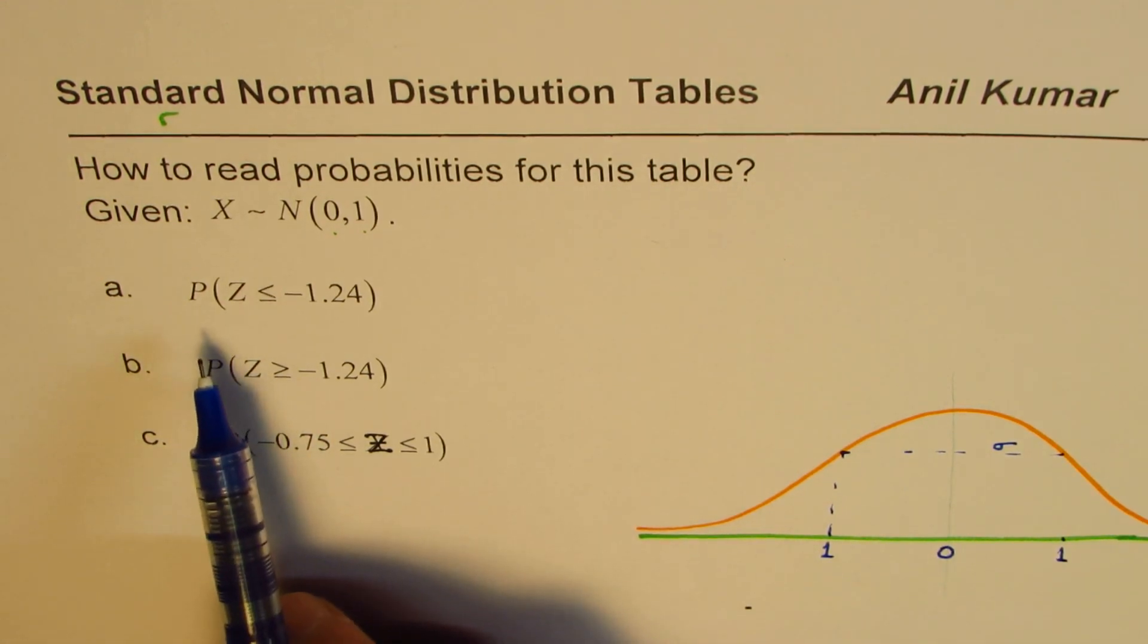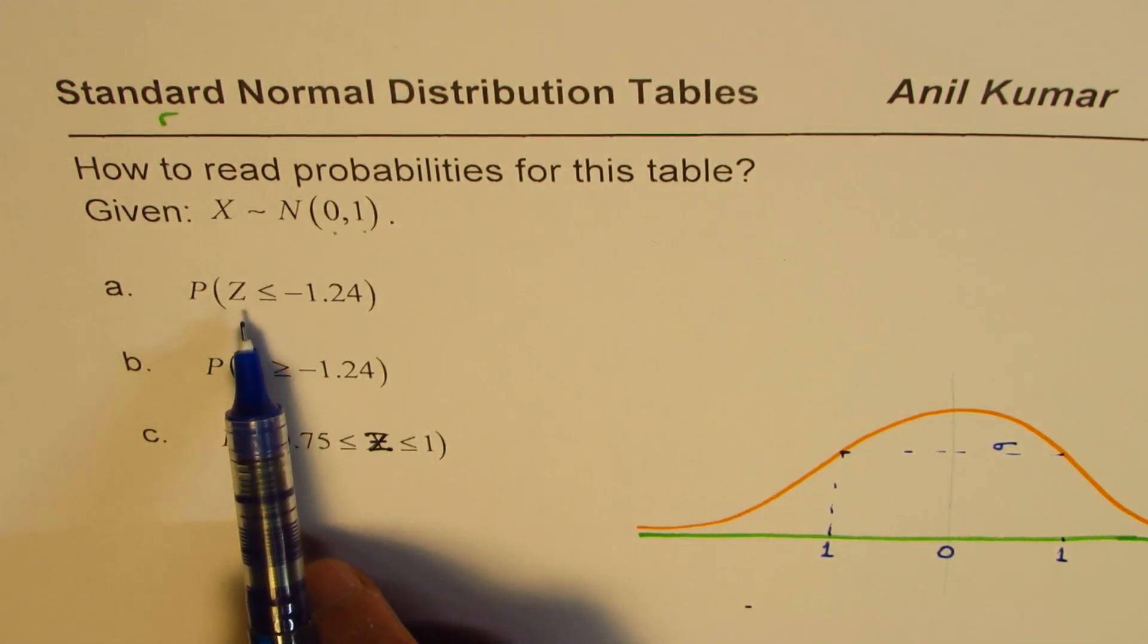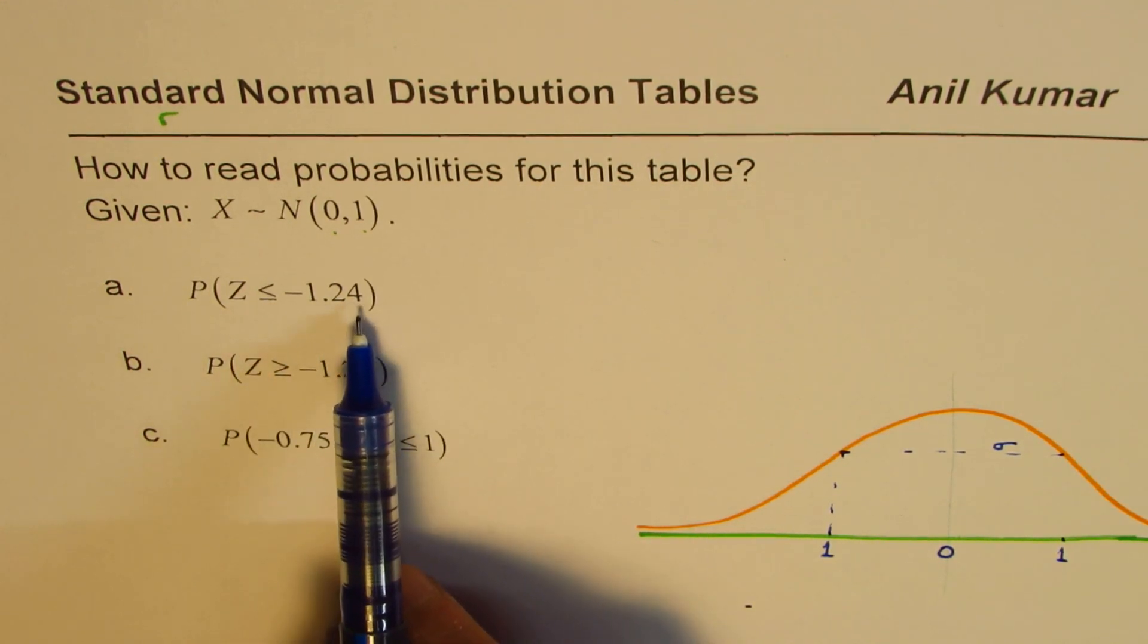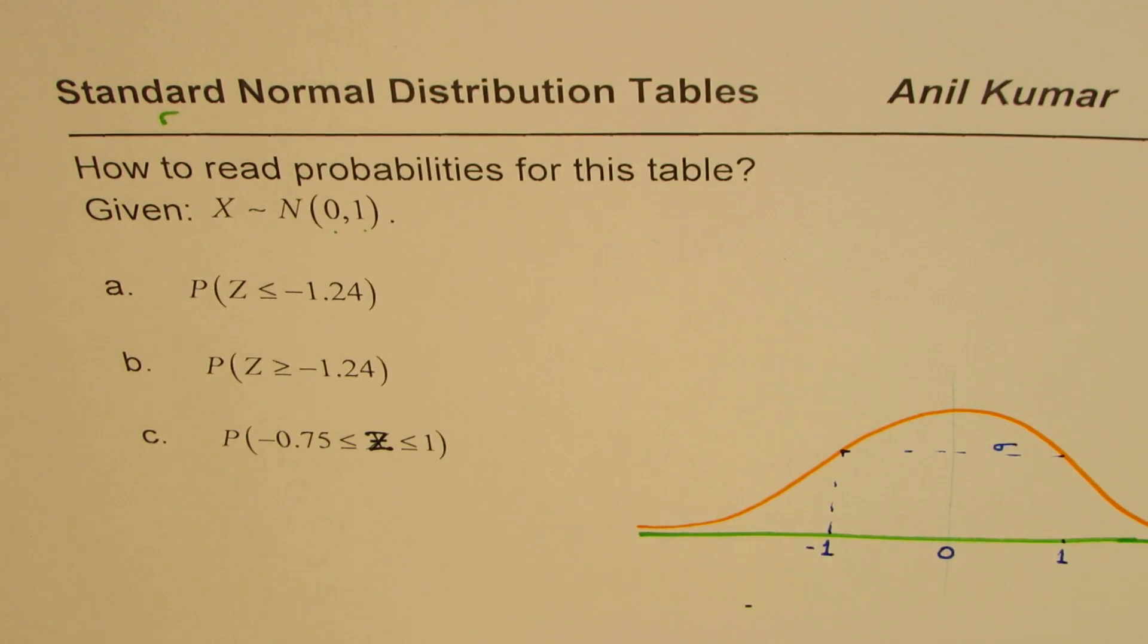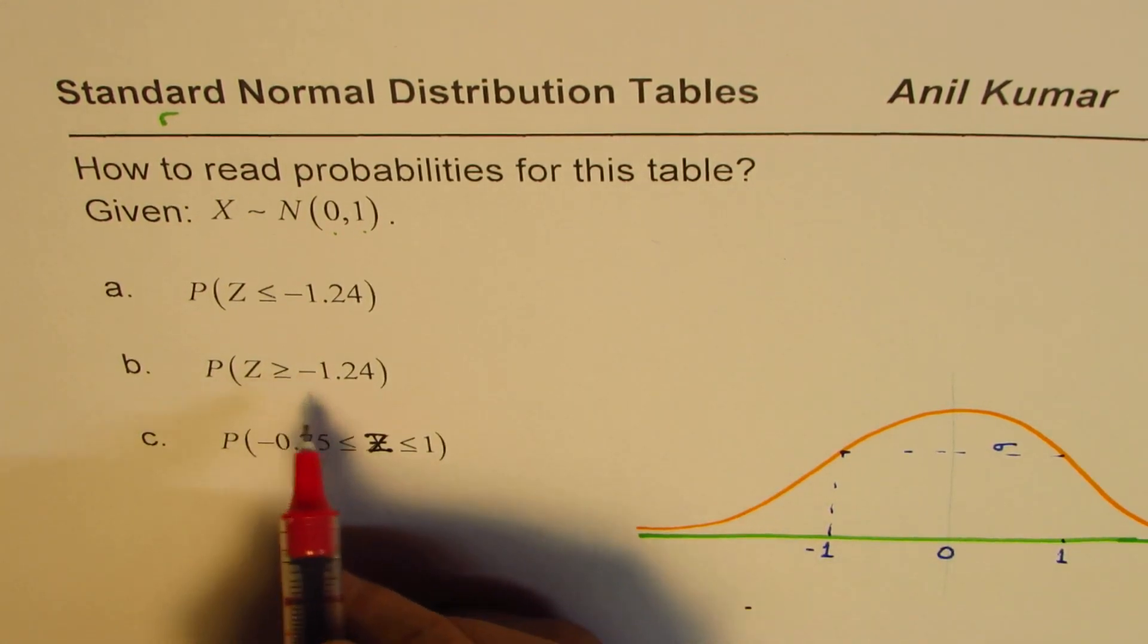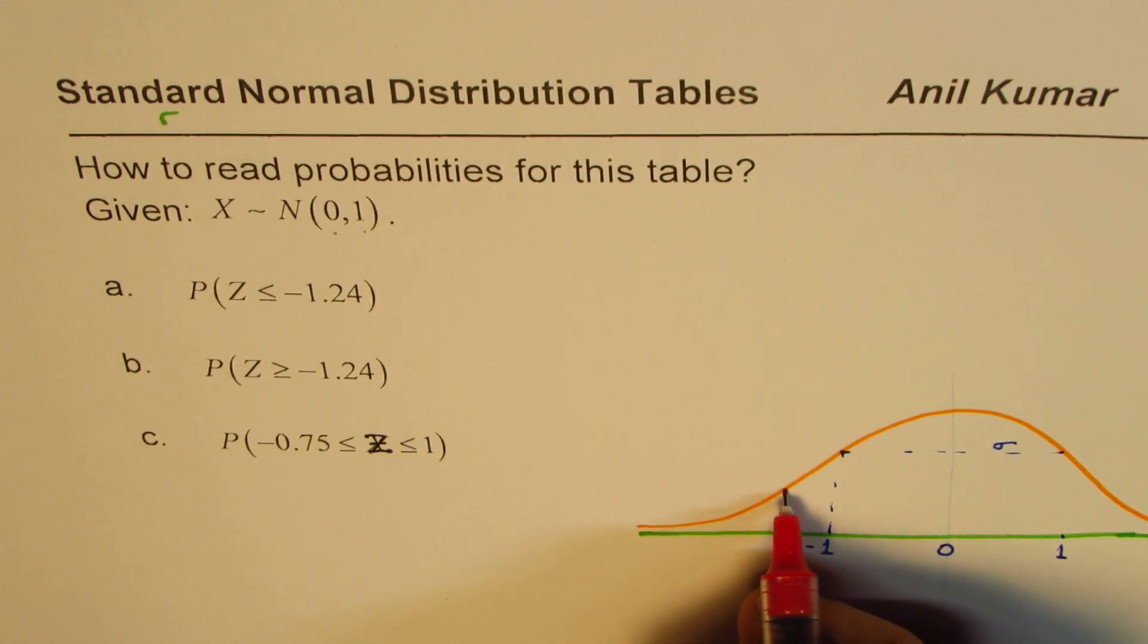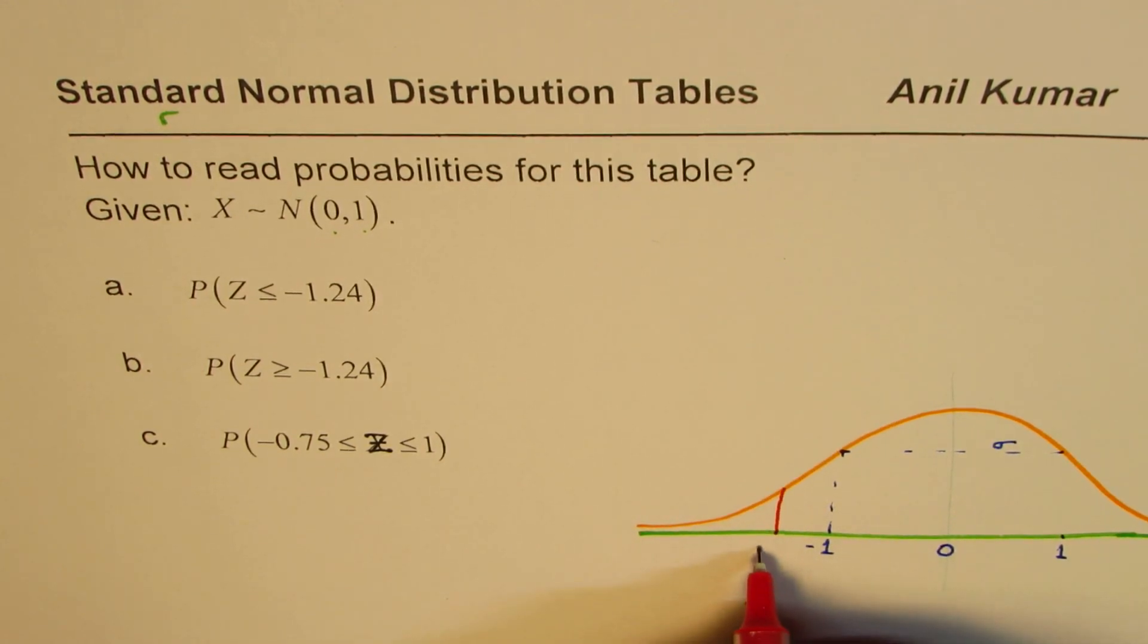Now, we are looking for z-score to be less than minus 1.24. It really means that it is on the left side. So all the numbers on the left side will be treated as negative. So minus 1.24 will be somewhere on the left of this deviation, kind of here. So this point is minus 1.24. So probability will mean area under this curve. So that is the area under the curve. That should be our answer.